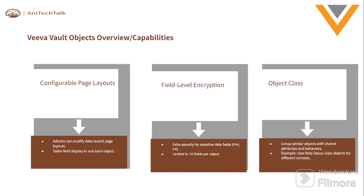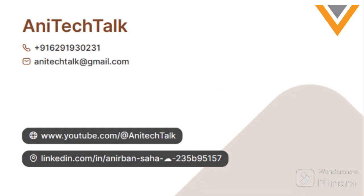System admins can manage page layout configuration. For field-level encryption, if you want to provide extra security at the field level, when creating a field you can enable field-level encryption. The limit is 10 fields for field-level encryption. Object classes, as mentioned, include user, role, setup, and user task — these provide standard configurations and a standard set of behaviors. That's all for today's session. Stay tuned to my channel; I'll bring more platform-level feature videos. I hope this helps anyone who wants to learn platform-level knowledge. Thanks, keep sharing, keep following, and keep supporting me. Thank you, bye!